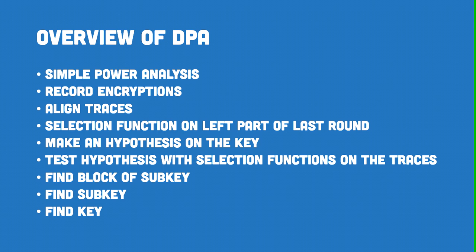This allows us to make assumptions on the key to use that function. After sorting, we'll have two sets filled with traces sorted according to that one bit. When we have those two sets, we compute the differential trace — the difference of those two sets — and this helps us get the key. If we made a correct assumption on the key, we'll get a signal; if not, we'll get something else — you'll see what. Once we confirm our guess on the six bits of the last round's subkey, we have one block of subkey. We can then repeat that with different bits and different blocks of subkeys until we get the entire subkey of the last round of DES, and then we can calculate the master key.